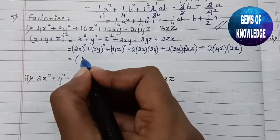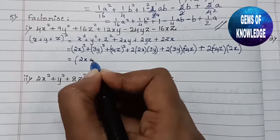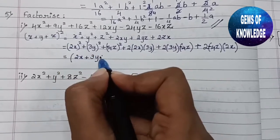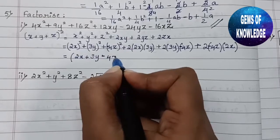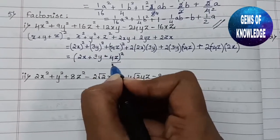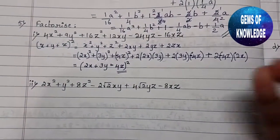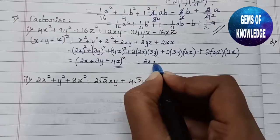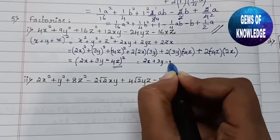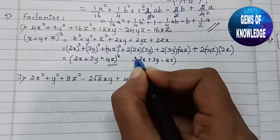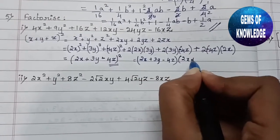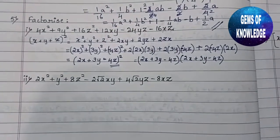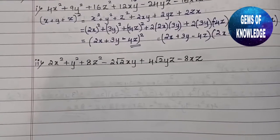So the whole expression can be written as (2x + 3y + (−4z))², which is (2x + 3y − 4z)². You can leave the answer in this form, or expand it as (2x + 3y − 4z)(2x + 3y − 4z). Both forms are acceptable.